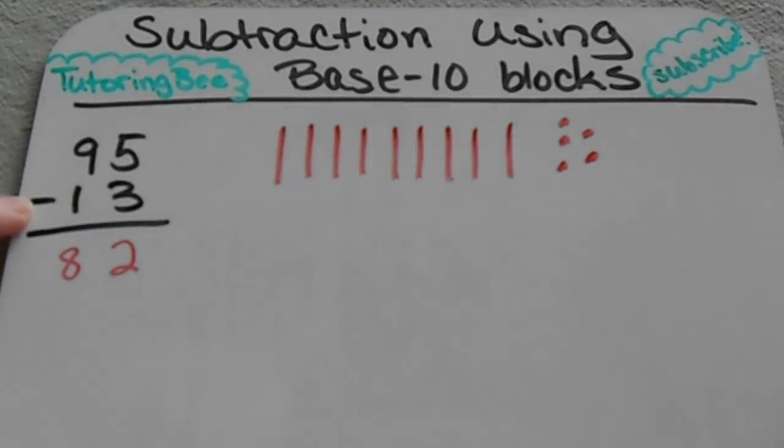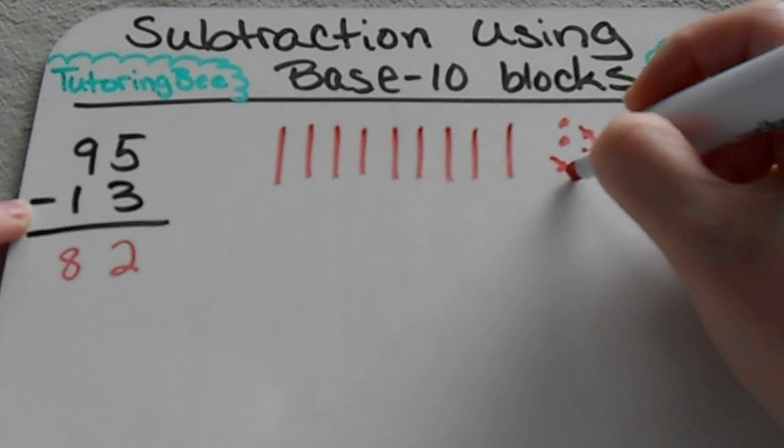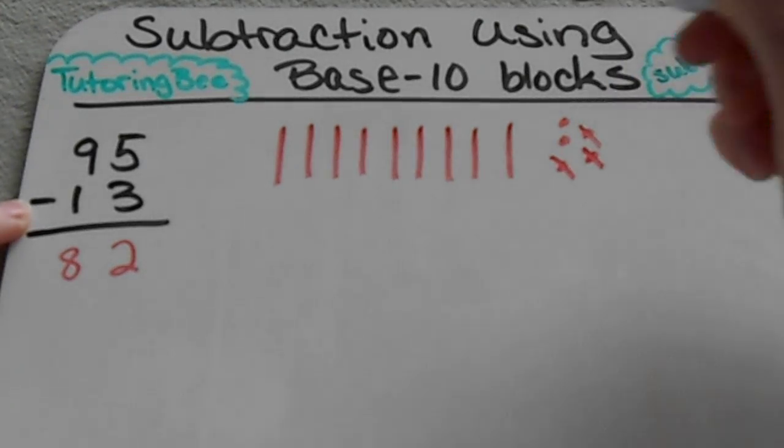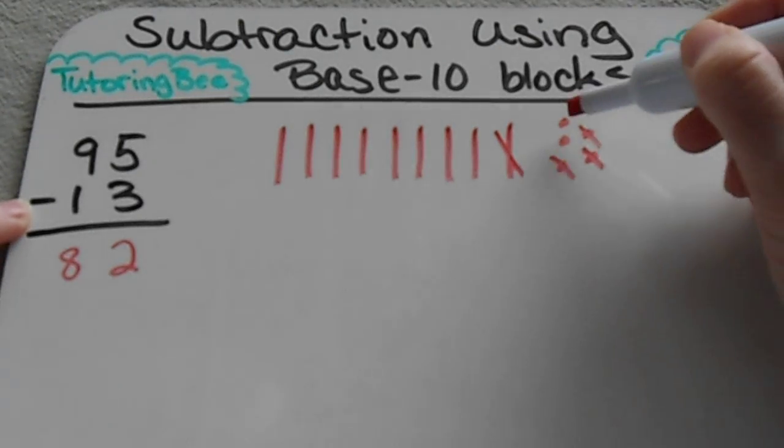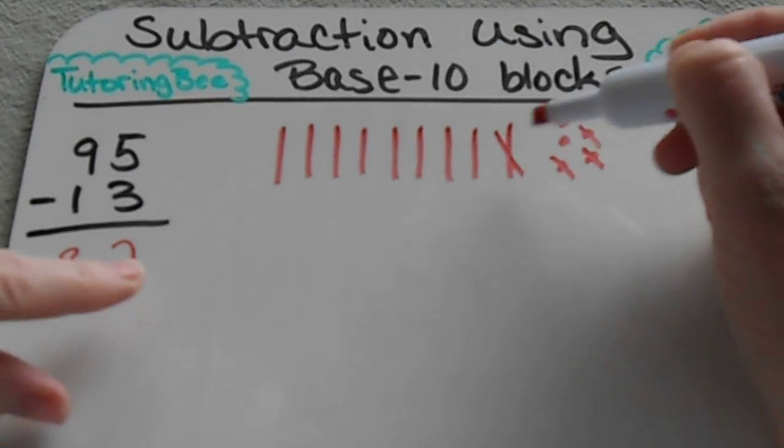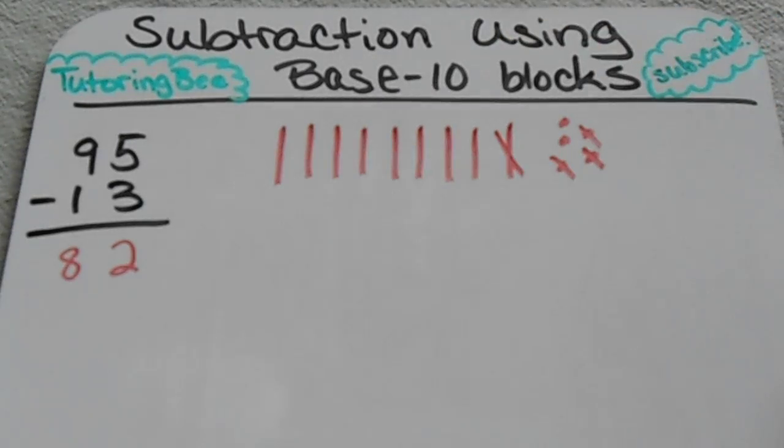And then to show this on paper when you're subtracting, you actually just cross off three of those ones and then you cross off one of those tens. And then you count up what you have left over, two ones and eight tens.